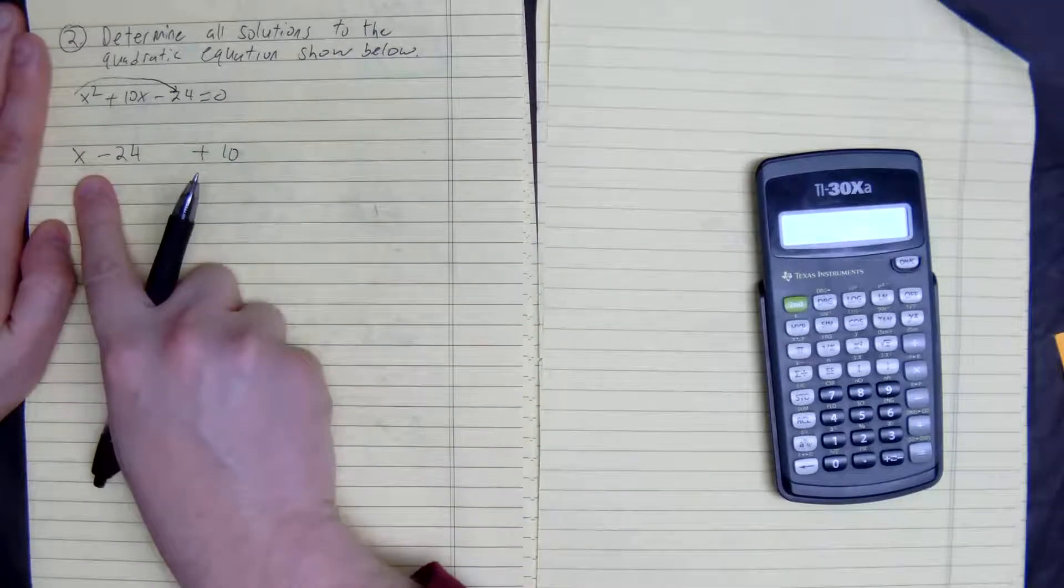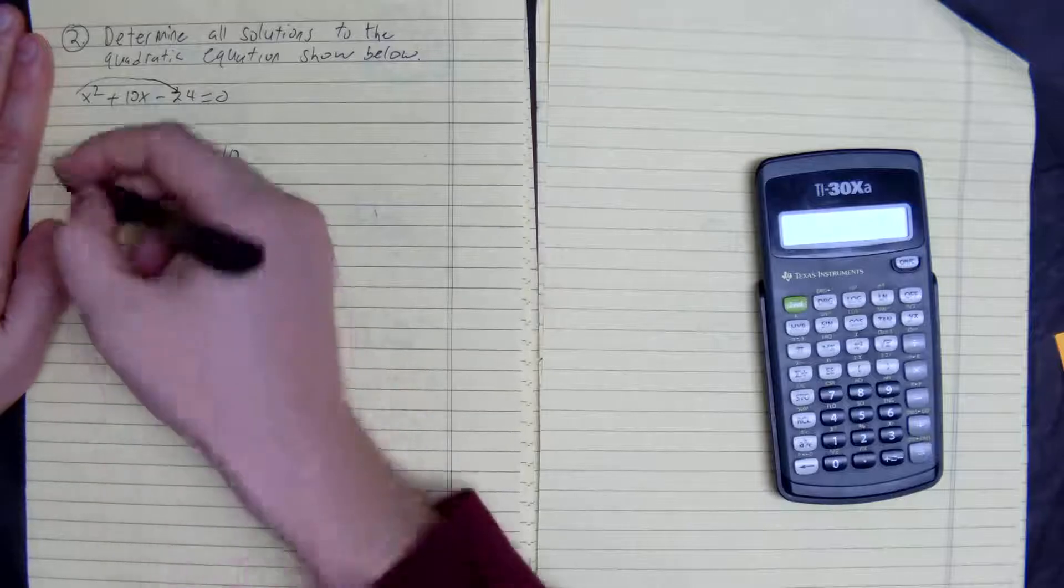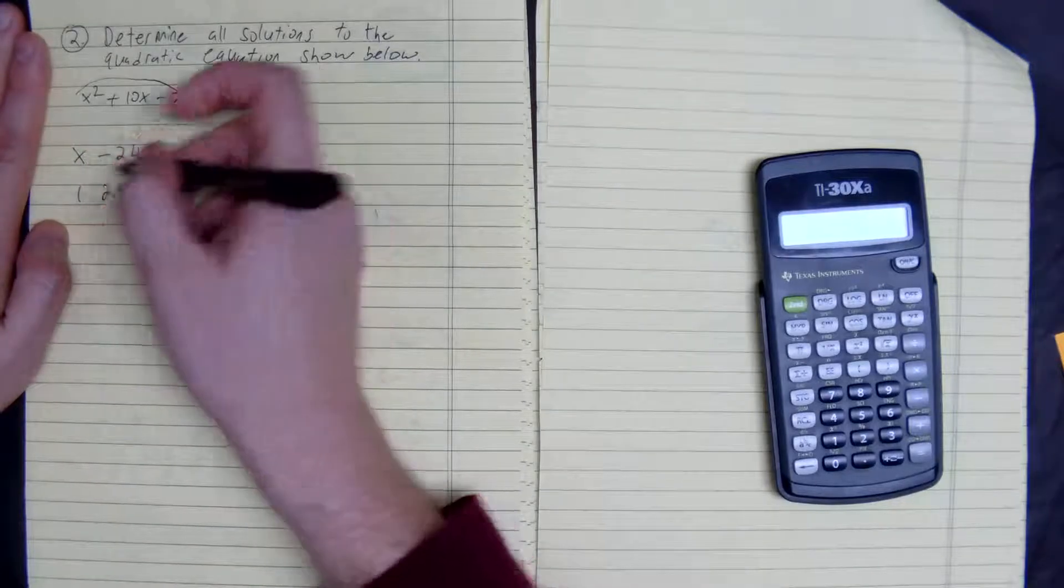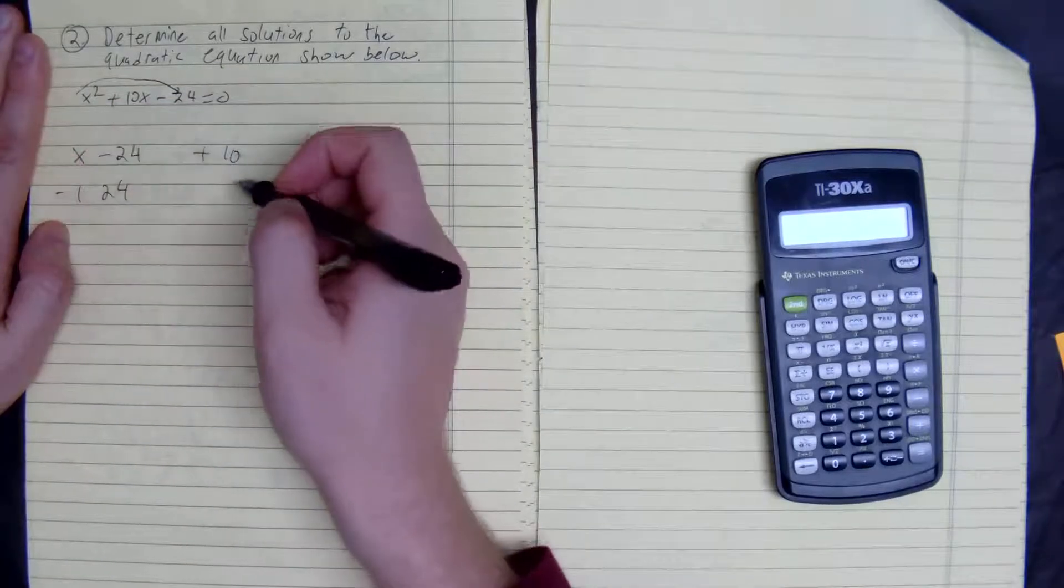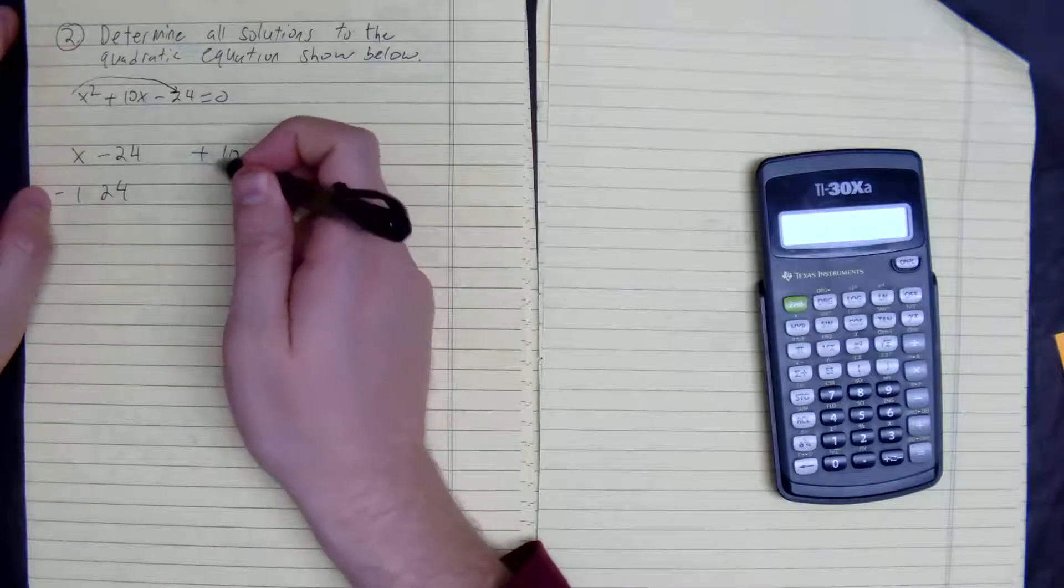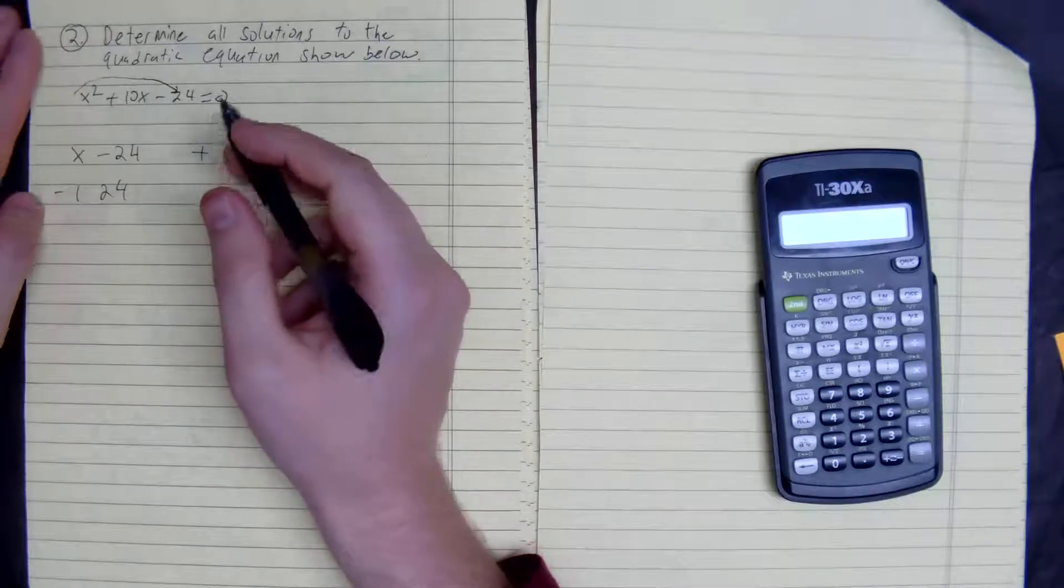So what I like to do is list the factors of 24 and go from there. Okay, 1 and 24, it doesn't matter which one is negative. It's not going to work.